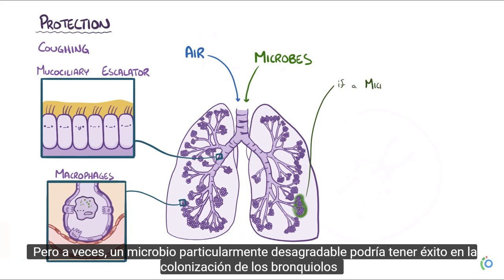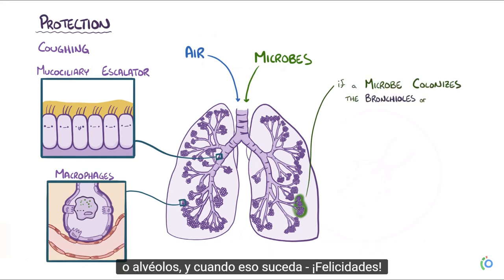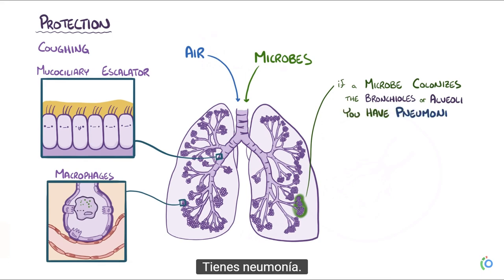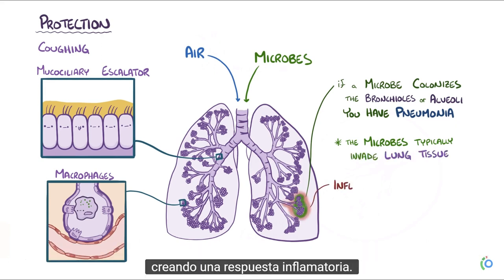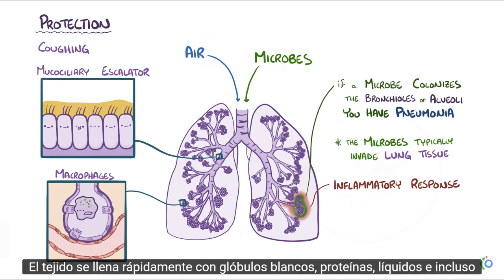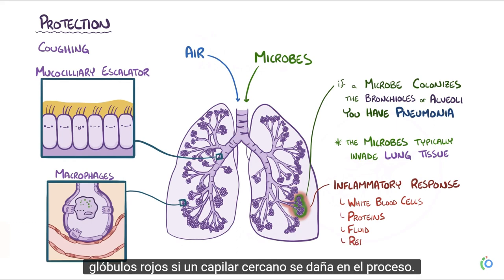But sometimes a particularly nasty microbe might succeed in colonizing the bronchioles or alveoli. When that happens, you've got pneumonia. Those microbes typically multiply and cross over from the airways into the lung tissue, creating an inflammatory response. The tissue quickly fills with white blood cells, proteins, fluid, and even red blood cells if a nearby capillary gets damaged.